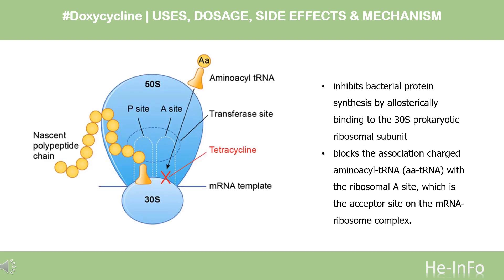Regarding mechanism of action: protein synthesis is essential for survival and functioning of cells, including bacteria. Doxycycline inhibits bacterial protein synthesis by allosterically binding to the 30S prokaryotic ribosomal subunit. The drug blocks the association of charged aminoacyl-tRNA (aa-tRNA) with the ribosomal A site, which is the acceptor site on the mRNA-ribosome complex. Doxycycline ultimately impedes the elongation phase of protein synthesis and halts the production of essential proteins for bacterial survival and functioning. Doxycycline also mediates anti-inflammatory actions by preventing calcium-dependent microtubular assembly and lymphocytic proliferation, thereby inhibiting leukocyte movement during inflammation. It also inhibits nitric oxide synthase, an enzyme that produces nitric oxide, an inflammatory signaling molecule.